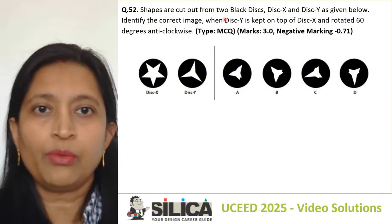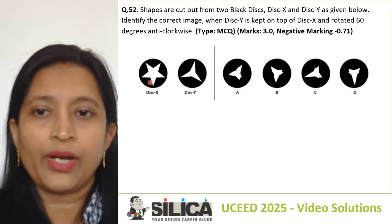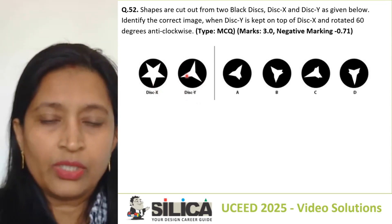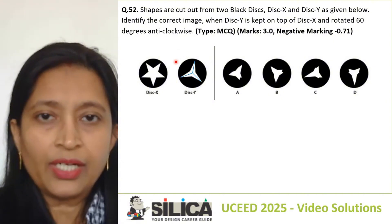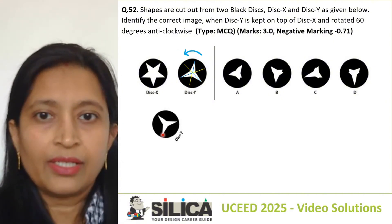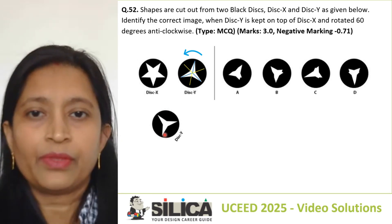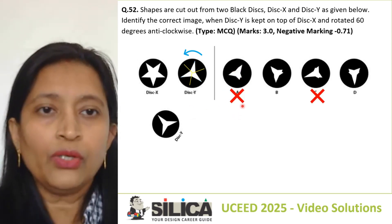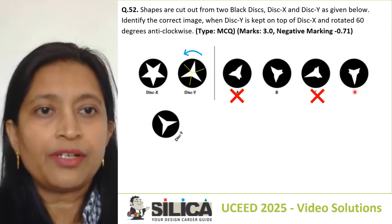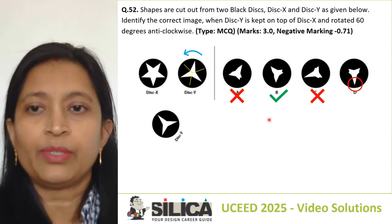Question number 52: shapes are cut out from two discs X and Y. Identify the correct image when disc X is kept on top of Y and rotated 60 degrees anti-clockwise. The cutout center makes 120 degrees, so rotating 60 degrees anti-clockwise shifts the cutout a little to the left. Checking the options — one has the cutout on the right side (wrong), another has the cutout in the wrong position (wrong), and another is also wrong. Option B has the cutout slightly to the left, making it the correct answer.